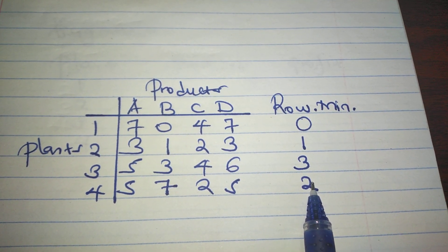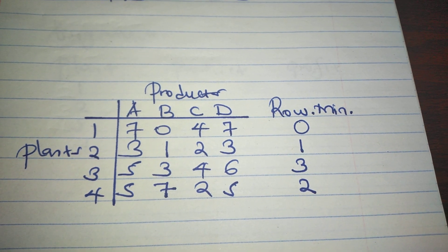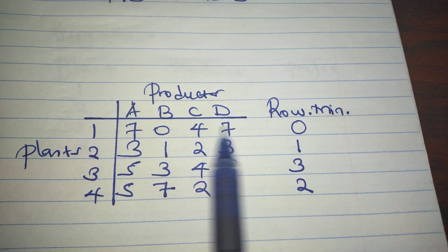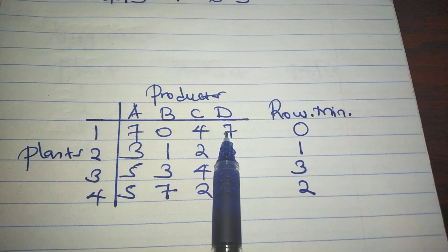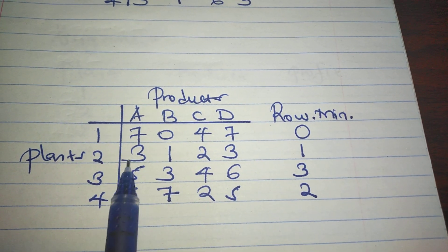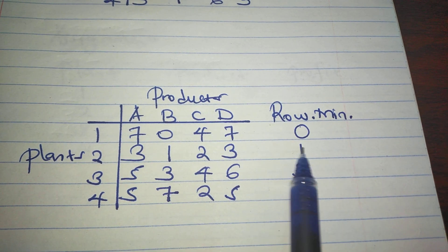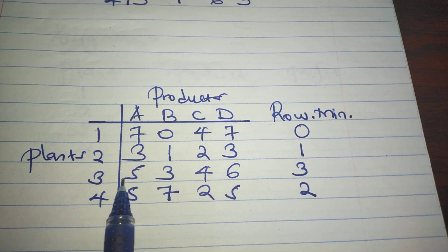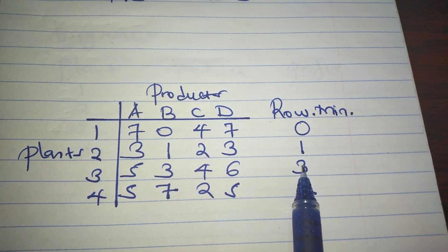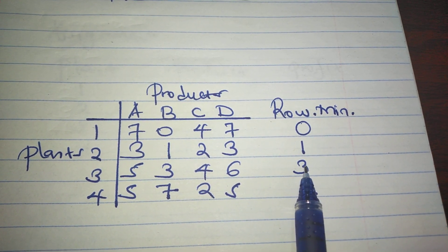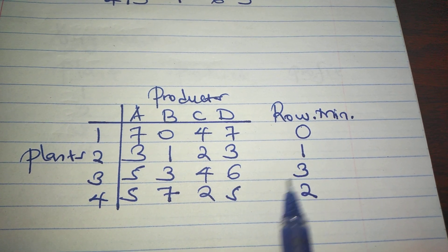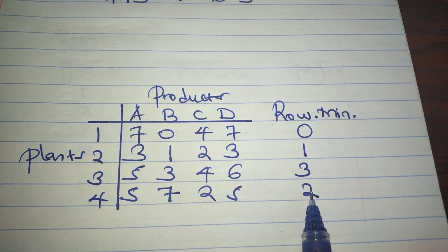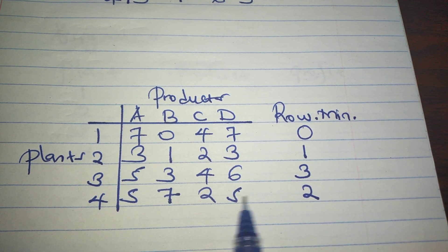So we reduce each row by its smallest element: row one: 7−0=7, 0−0=0, 4−0=4, 7−0=7. Row two: 3−1=2, 1−1=0, 2−1=1, 3−1=2. Row three: 5−3=2, 3−3=0, 4−3=1, 6−3=3. Row four: 5−2=3, 7−2=5, 2−2=0, 5−2=3.